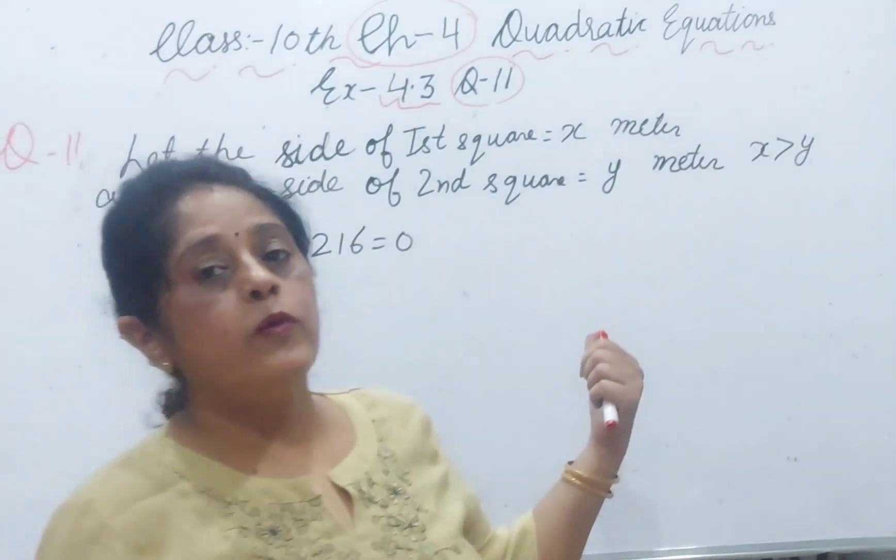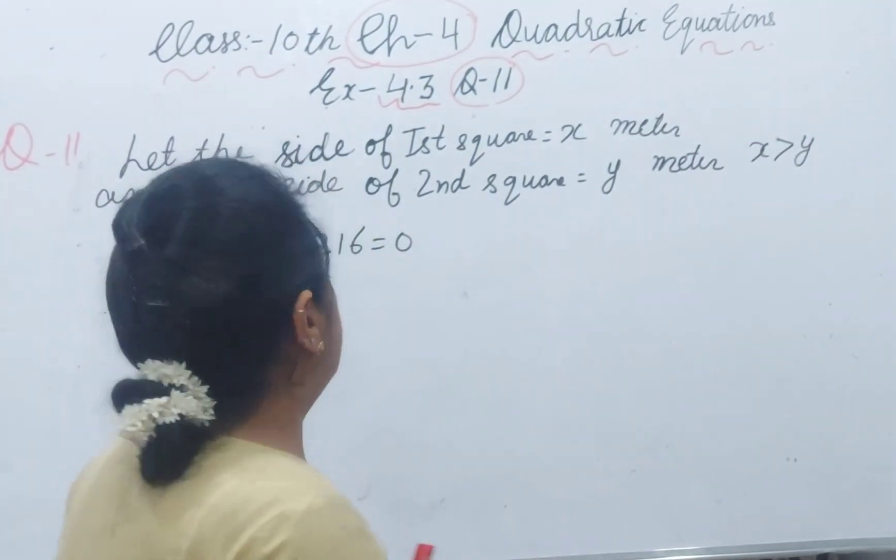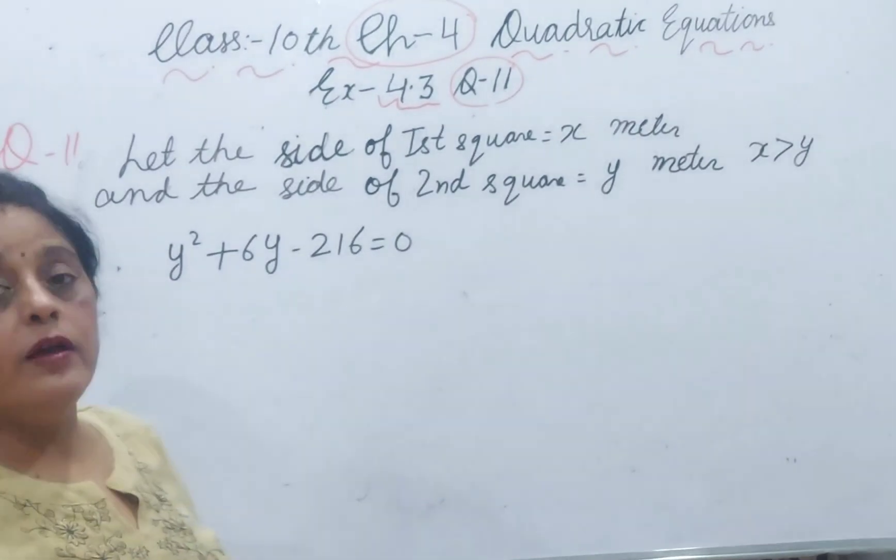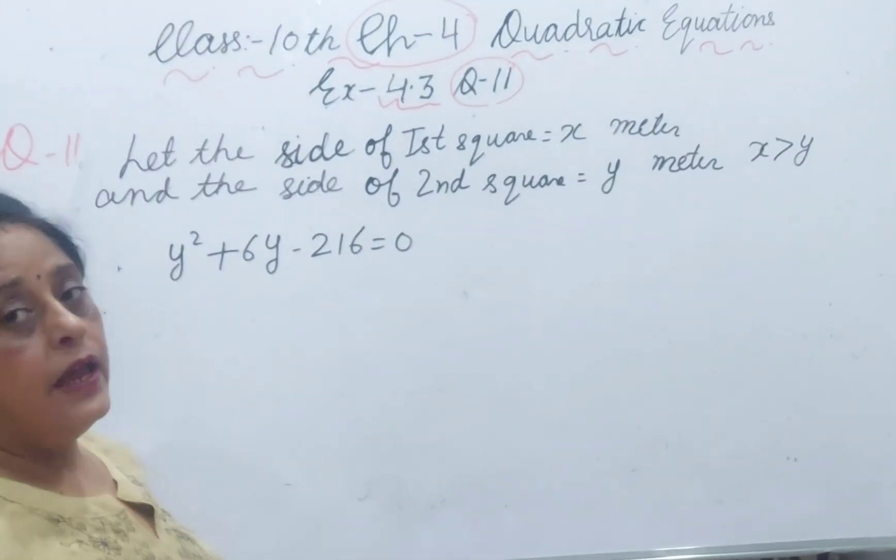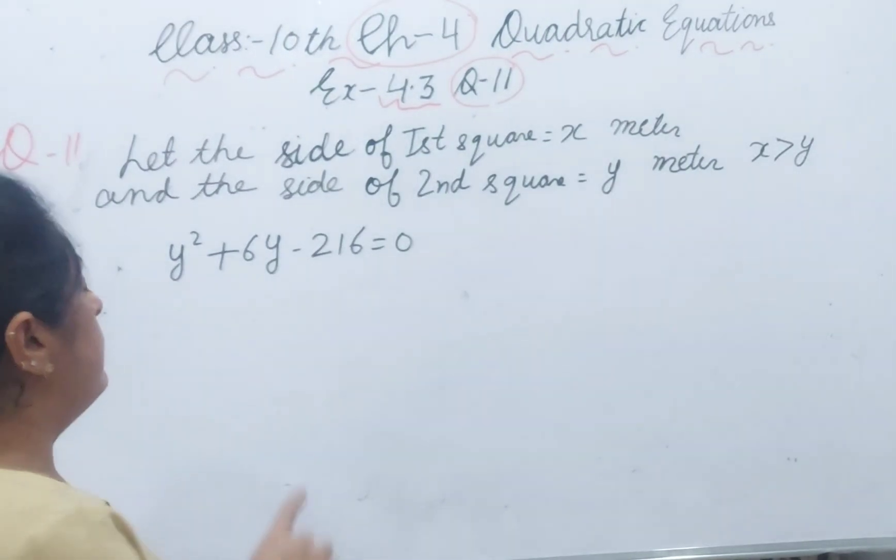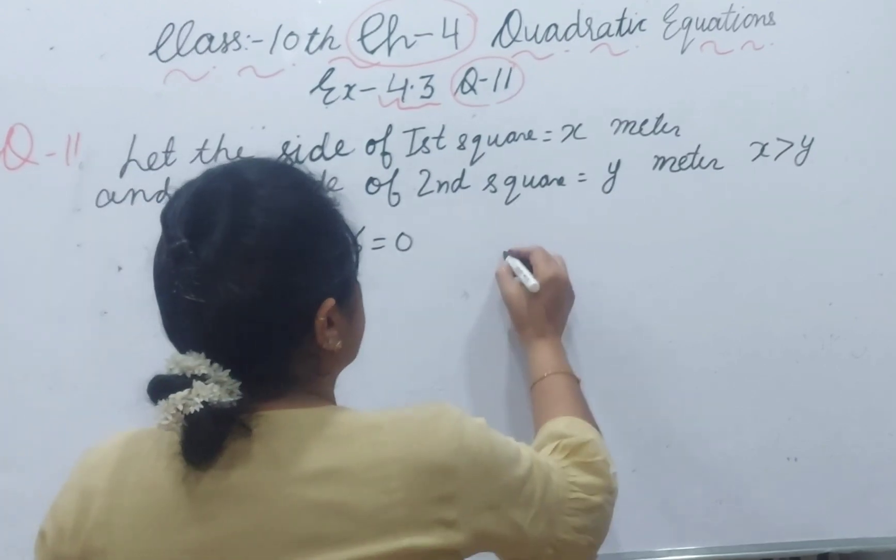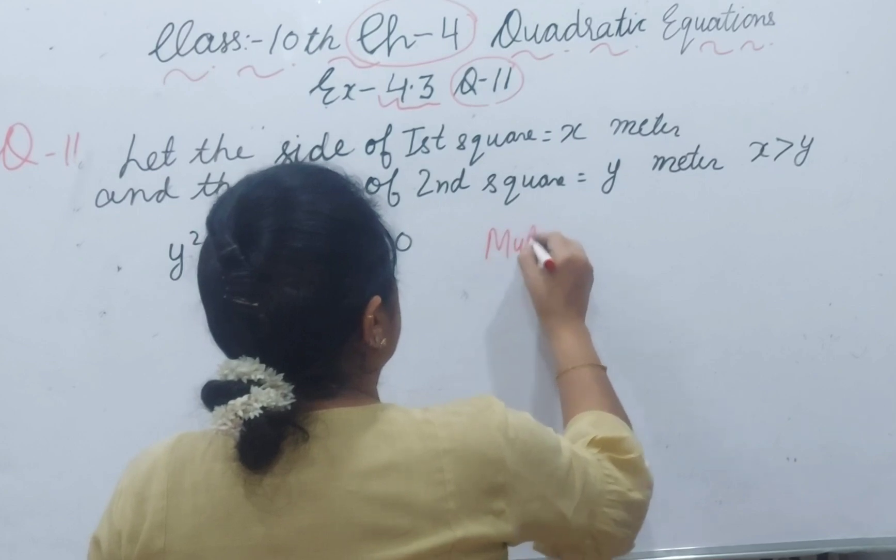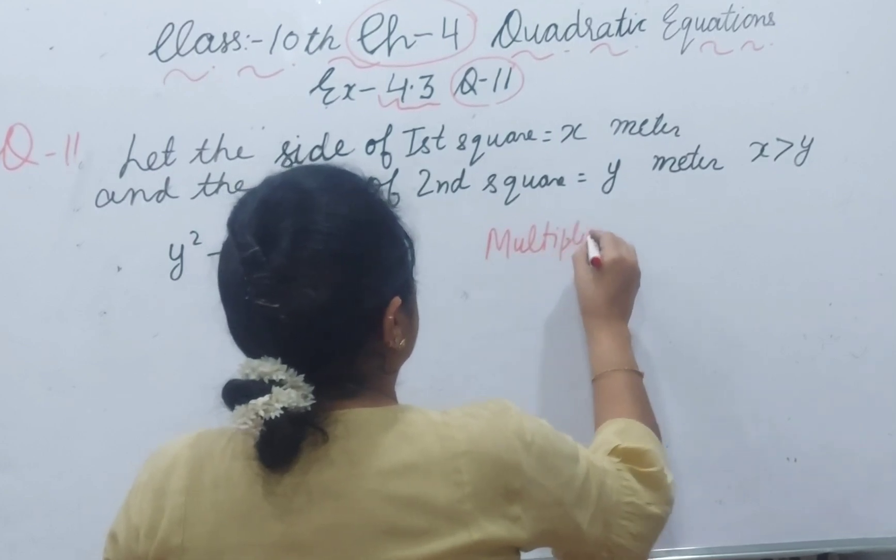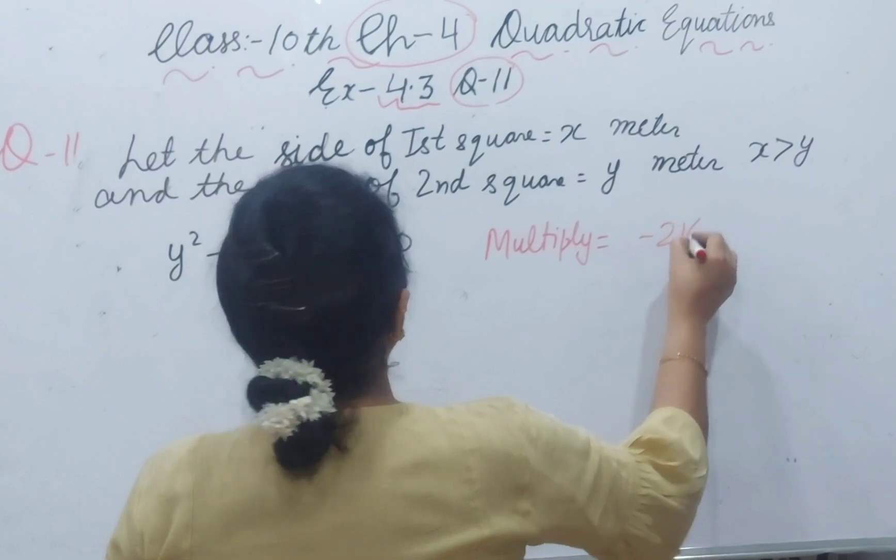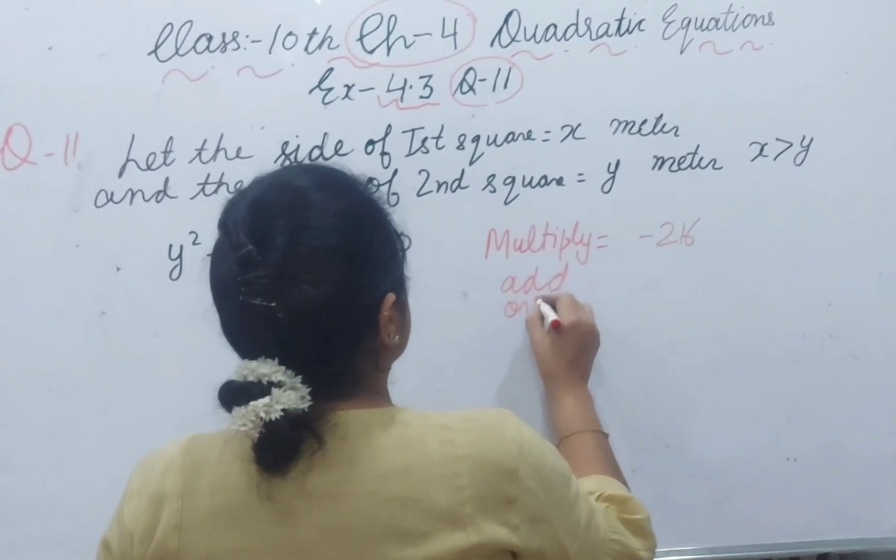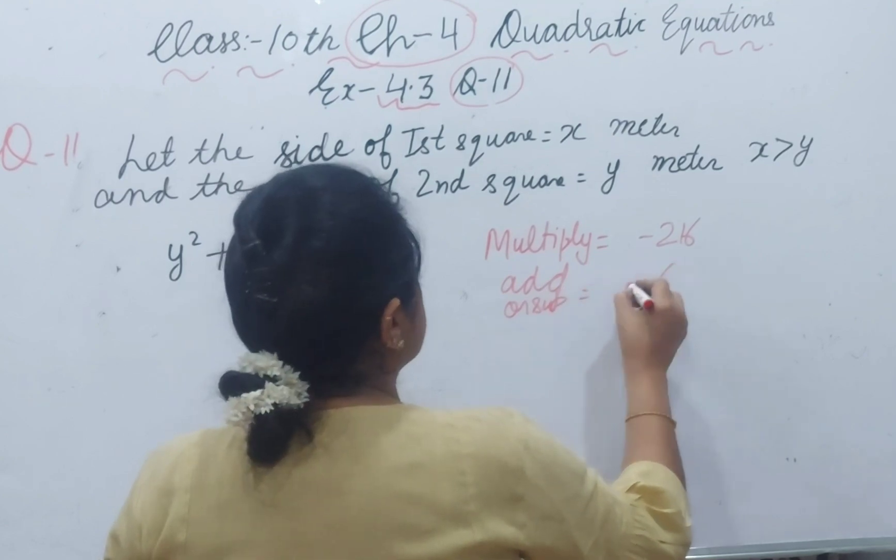I have written the quadratic equation here. You can solve this by using quadratic formula or completing the square method, and I will use split the middle term. We have to make two factors like that. If we multiply, we will get minus 216. And if we add or subtract, we will get plus 6.